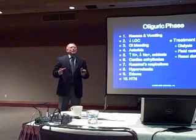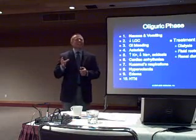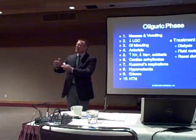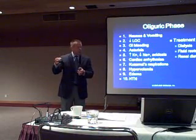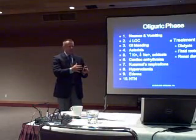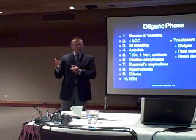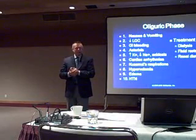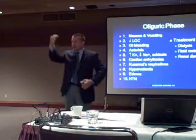In acute renal failure, remember that all this is happening suddenly and secondarily to something else. Acute renal failure is a secondary disease — nobody comes to the hospital with acute renal failure. They come with sepsis or a myocardial infarction and then develop acute renal failure. Because of that, it has a high mortality — approximately 40%. Whereas in chronic renal failure, for patients on dialysis, the mortality is less than 1%. Big difference.